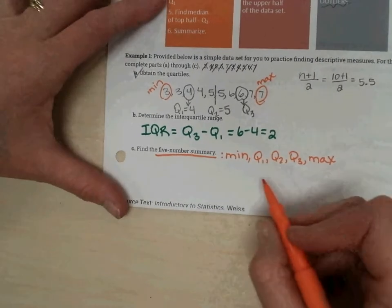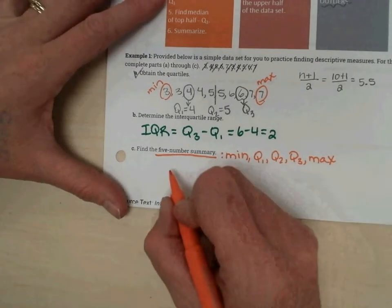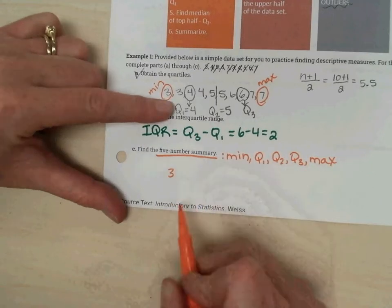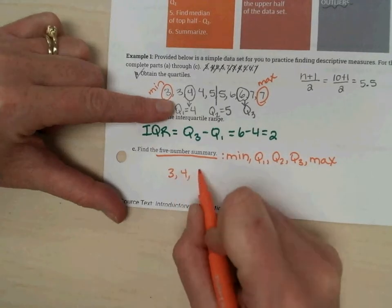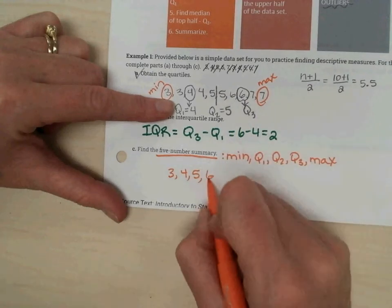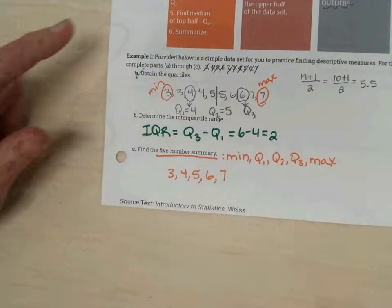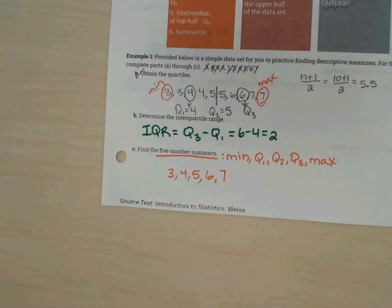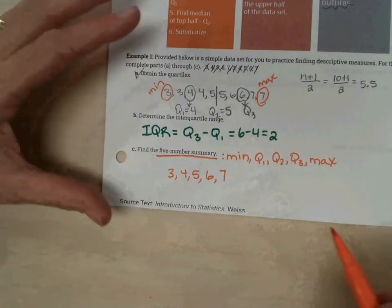So I'm just going to write my five-number summary as three, Q1 is four, Q2 is five, Q3 is six, and my max is seven. And that's my five-number summary.